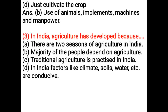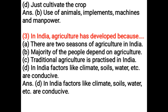In India, agriculture has developed because — Option A: There are two seasons of agriculture in India, Option B: Majority of the people depend on agriculture, Option C: Traditional agriculture is practiced in India, Option D: Factors like climate, soils, water etc. are conducive. Correct answer is Option D: In India, factors like climate, soils, water etc. are conducive.